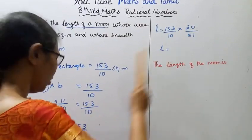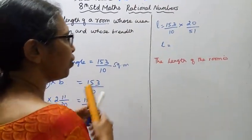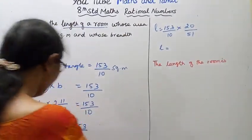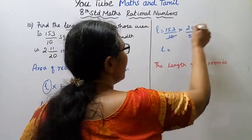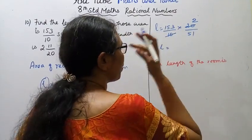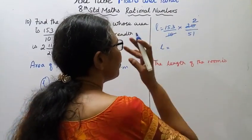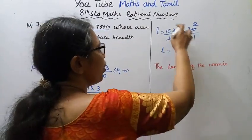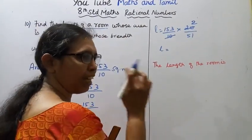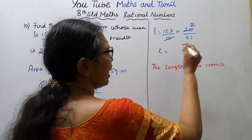L into 51 by 20 equals 153 by 10. So L equals 153 by 10 into 20 by 51. Now 51 and 153 cancels, you can easily find 3.